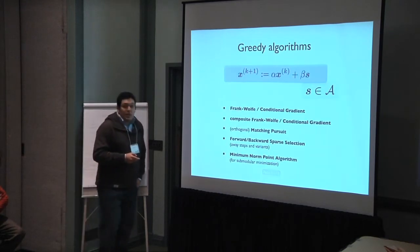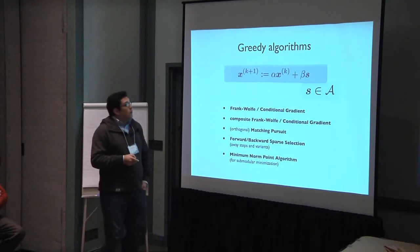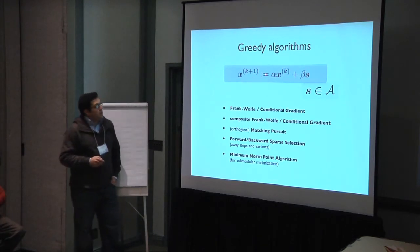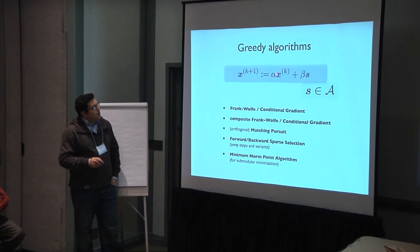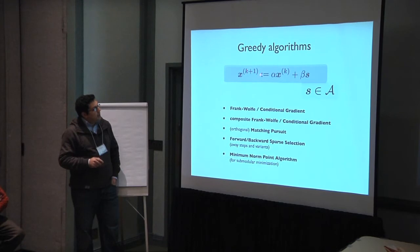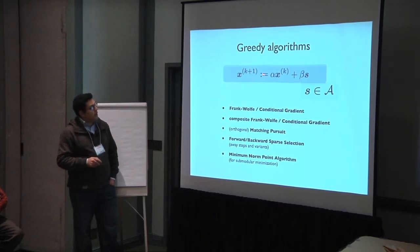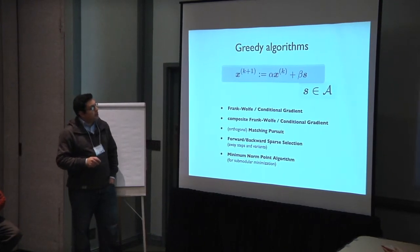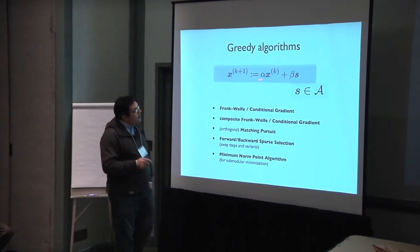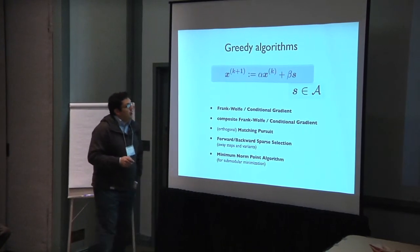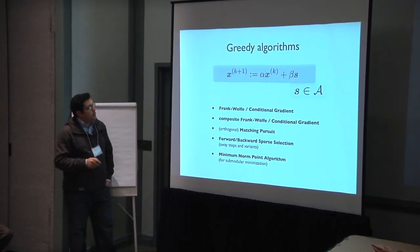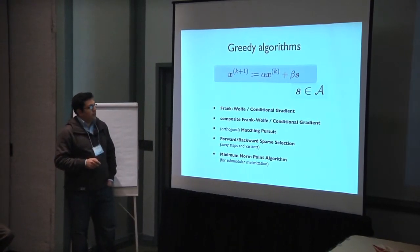The general updates of Frank-Wolf algorithms or greedy algorithms can be written as follows: we make an update from the argument x at step k, then we add a small atom to get the next iterate. The updates can be written as some linear combination of the next atom and the previous iterate.